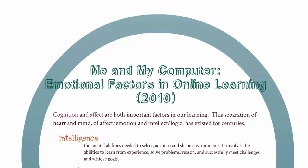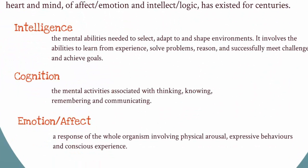Let's think back to our definitions of these terms from previous video clips. Intelligence was the mental abilities needed to select, adapt to, and shape environments — our ability to learn from experience, to reason and solve problems, and to meet the challenges and goals in front of us. Cognition referred to the mental activities involved in thinking, knowing, remembering, and communicating. And emotion, or affect, was a response of the whole organism, including physical response, expressive behaviors, and conscious experience.